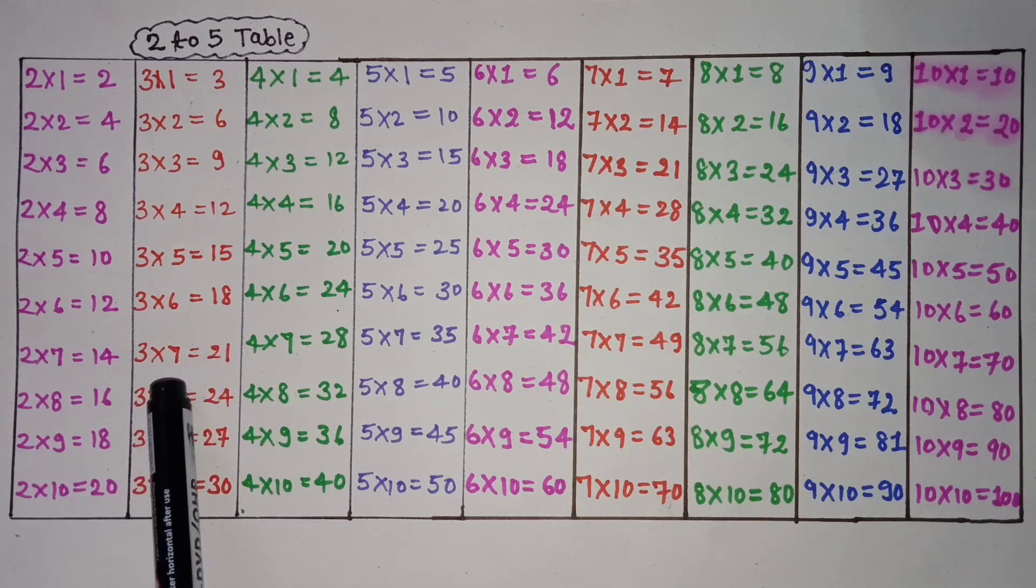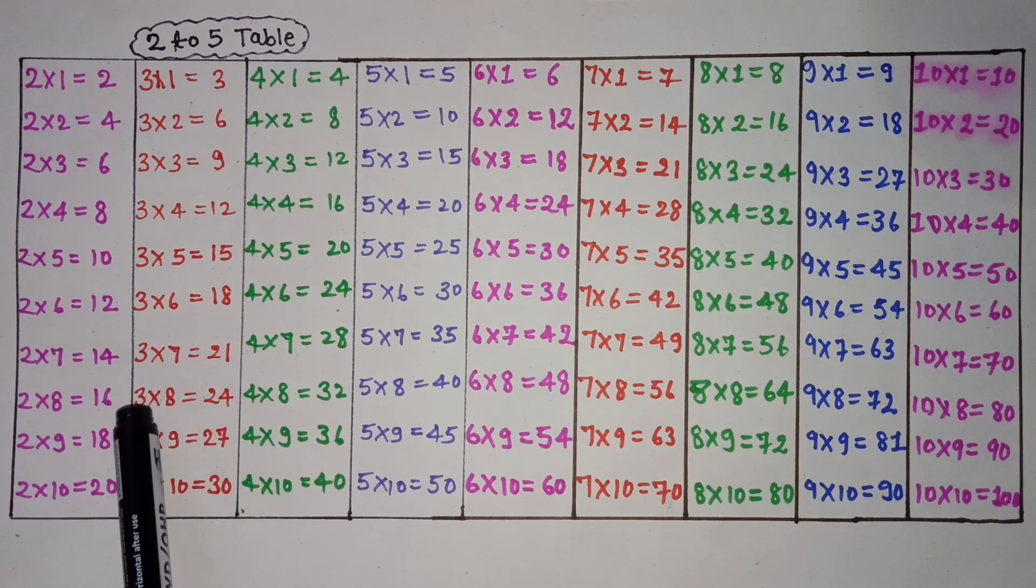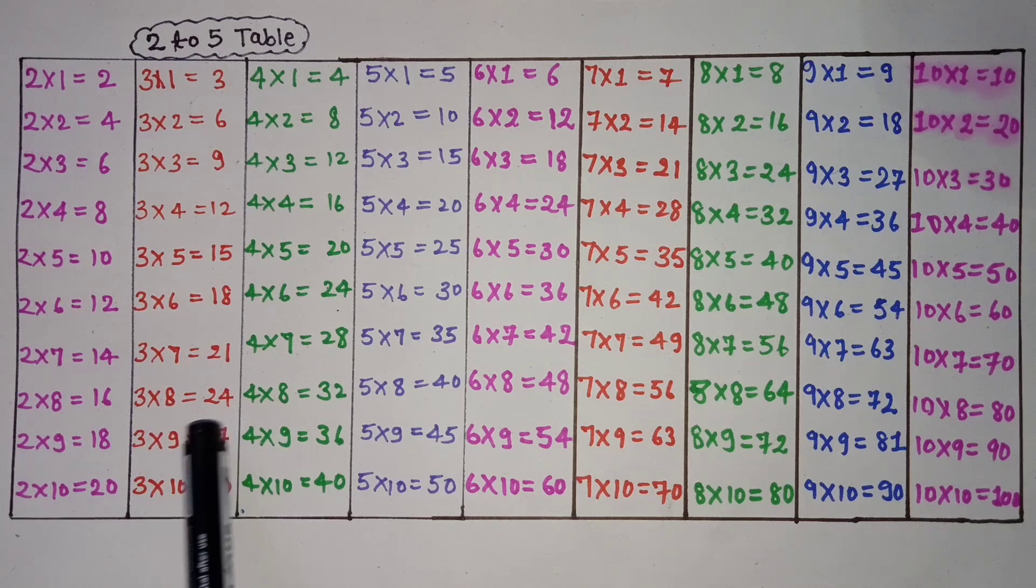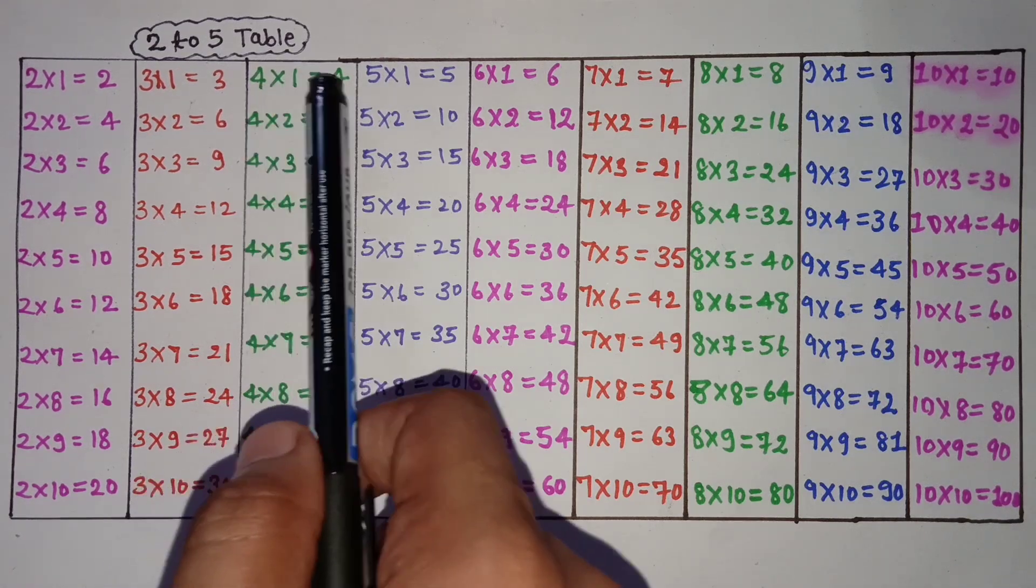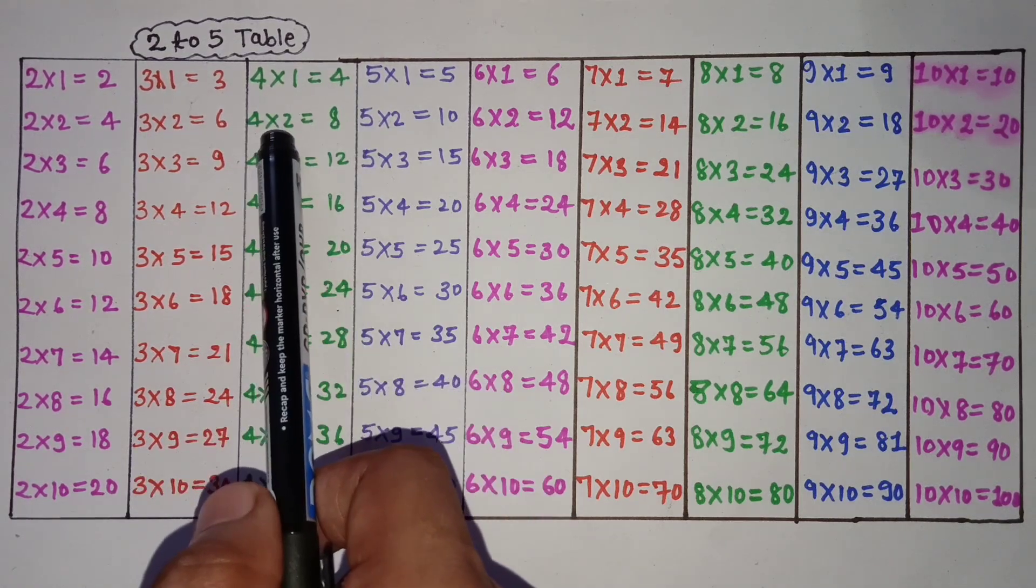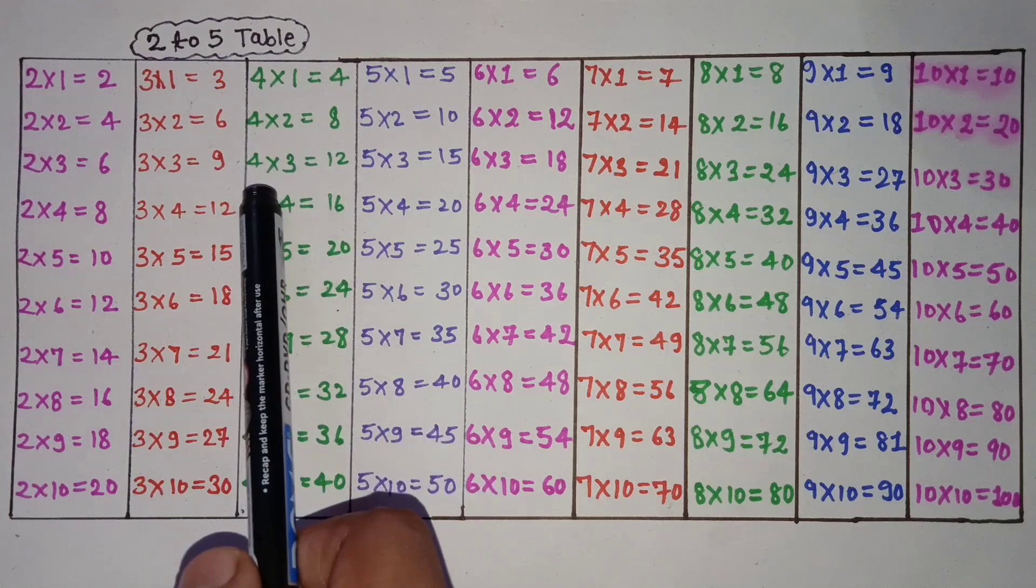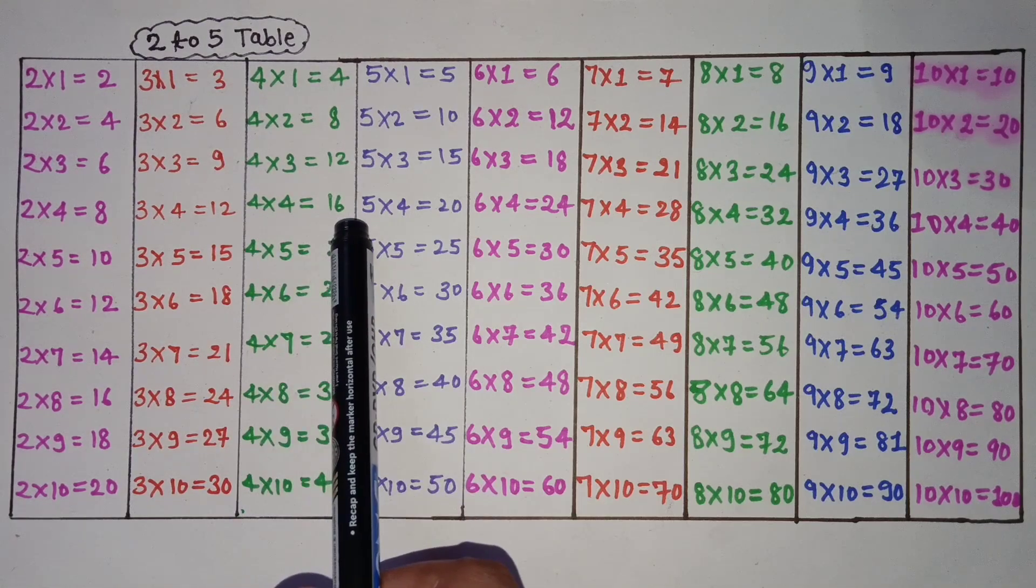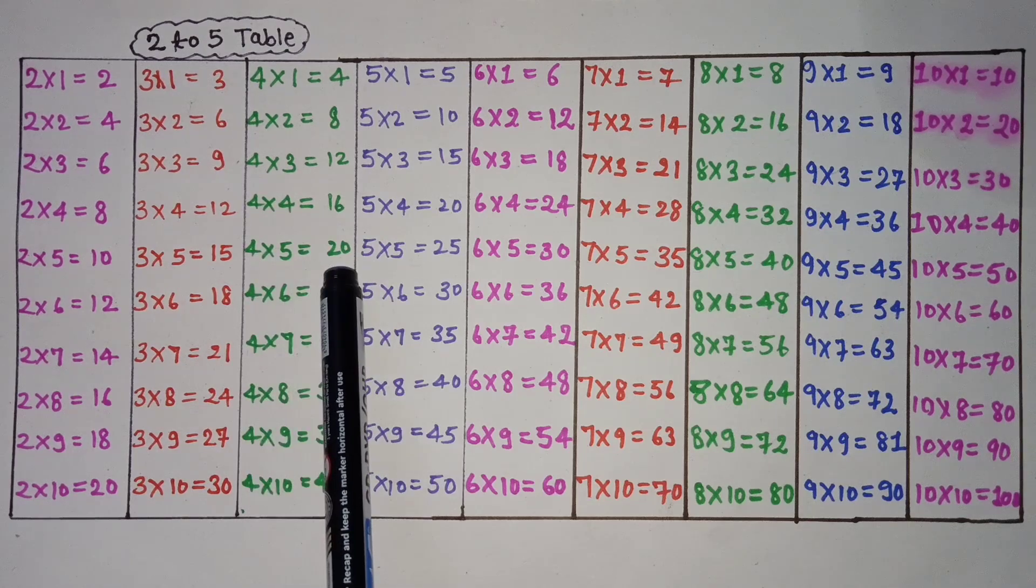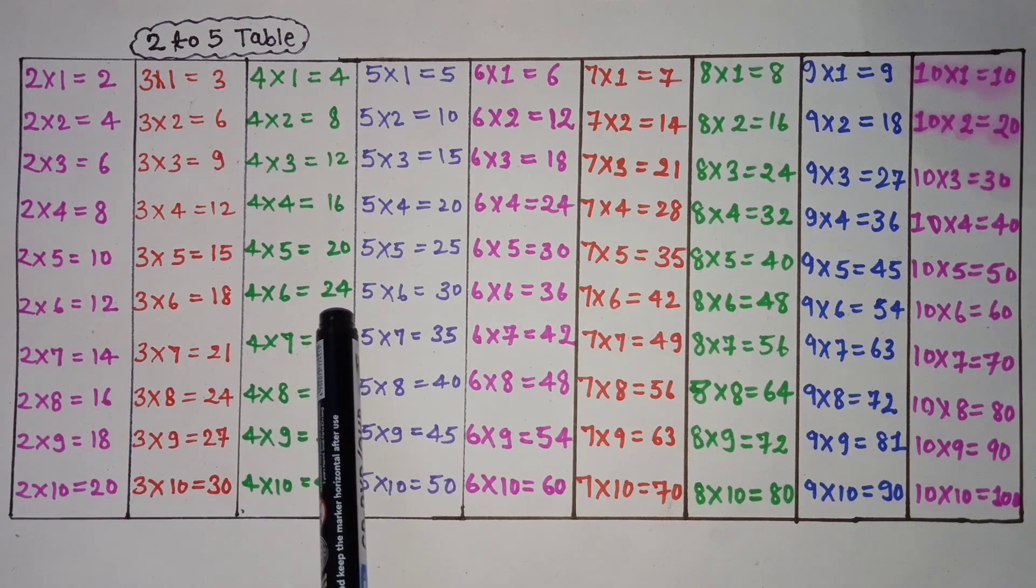3 times 7 is 21, 3 times 8 is 24, 3 times 9 is 27, 3 times 10 is 30. 4 times 1 is 4, 4 times 2 is 8, 4 times 3 is 12, 4 times 4 is 16, 4 times 5 is 20, 4 times 6 is 24.